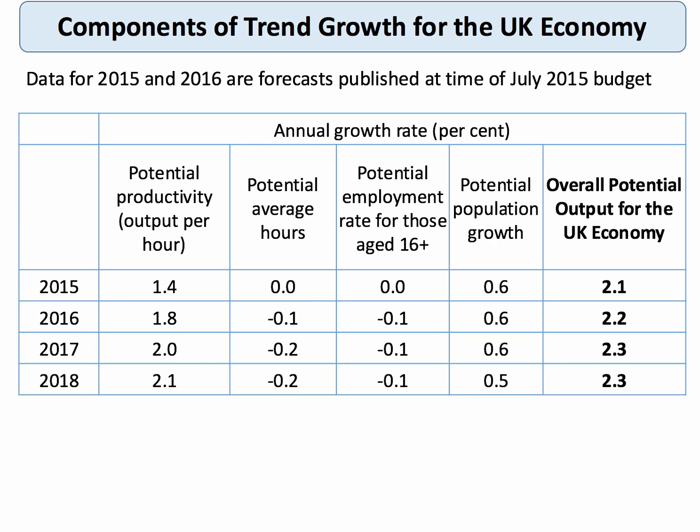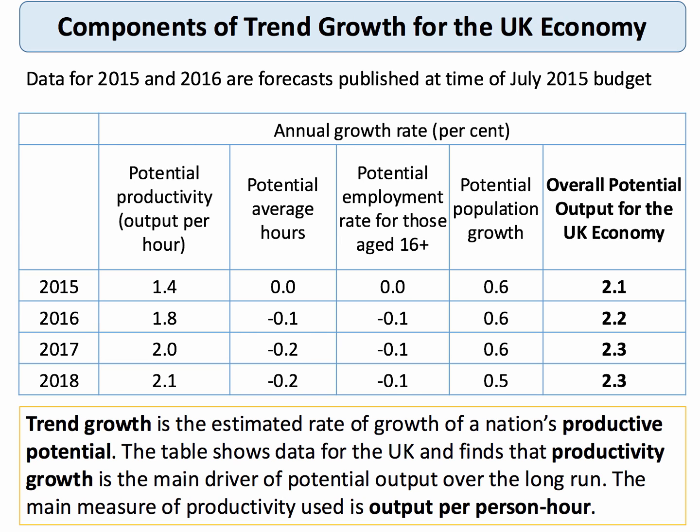The main measure of productivity used here is output per person hour. In 2015, potential productivity was rising at 1.4%, with no real change in potential average hours worked or the employment rate, and a small population growth factor. The estimate is that potential output of the UK was going to grow by just over 2% a year. That two percent figure is quite important — most of the increase in 2016 and 2017 is due to the rise in productivity. Potential output in the UK is fundamentally determined by how quickly we can increase our productivity.